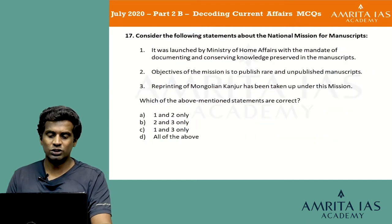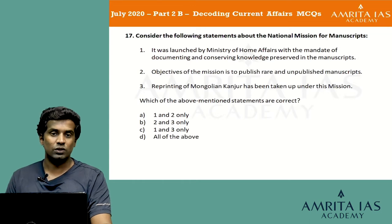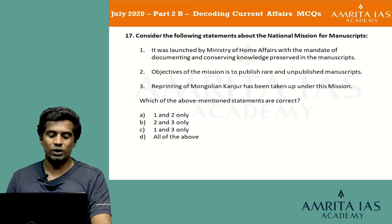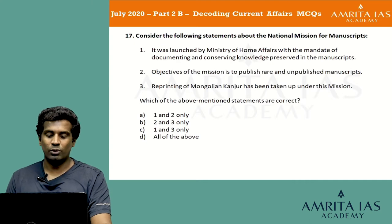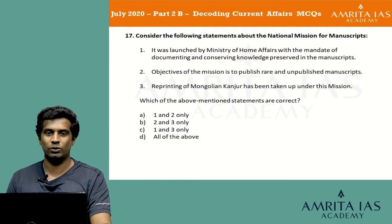Consider the following statements about the National Mission for Manuscripts: 1) It was launched by the Ministry of Home Affairs with the mandate of documenting and conserving knowledge preserved in the manuscripts. 2) An objective of the mission is to publish rare and unpublished manuscripts. 3) Reprinting of Mongolian Kanjur has been taken up under this mission. Which statements are correct? Option A: 1 and 2 only, option B: 2 and 3 only, option C: 1 and 3 only, option D: all of the above.